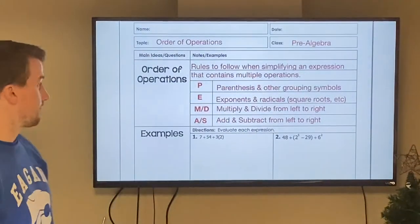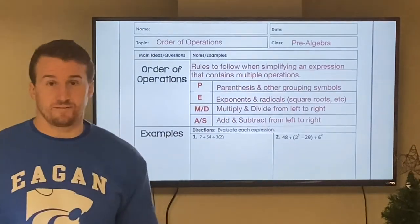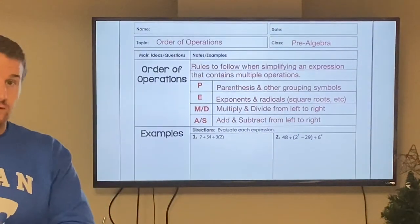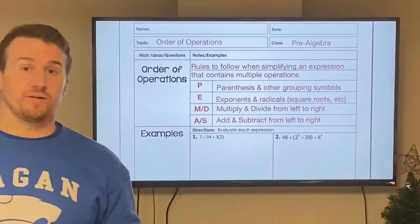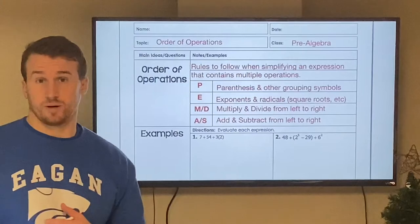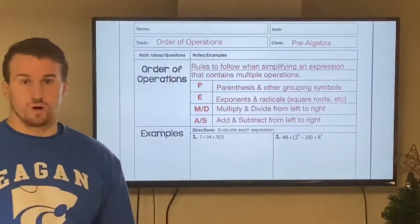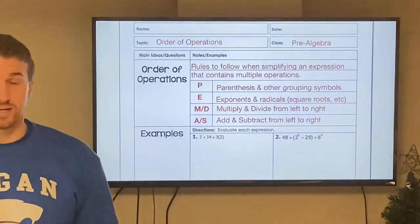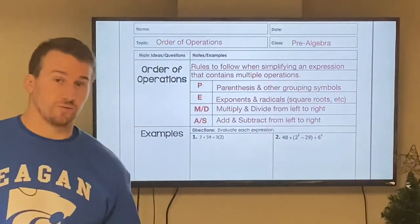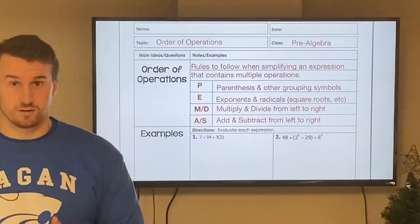Then we go to multiply and divide in order from left to right — I don't always multiply first; I could divide first if it's the first thing I see on the left, just like we read a book left to right. The last two are add and subtract, again from left to right, which means if subtraction comes before addition reading left to right, I would subtract then add.